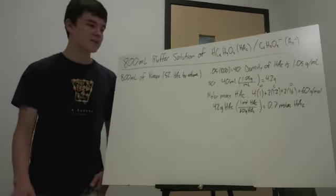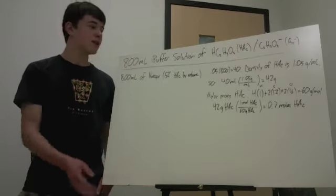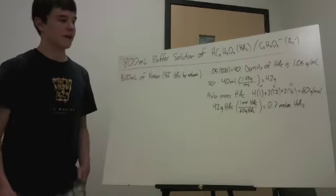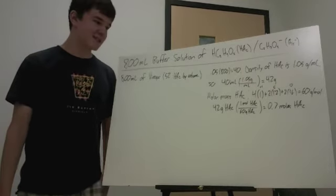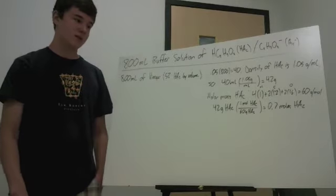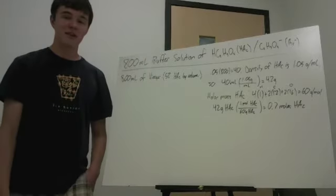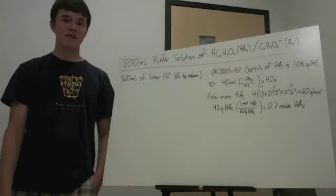Now, to find out how much sodium hydroxide we're going to need to make this solution, we have to figure out first how many moles of acetic acid we've got. So, the molar mass of acetic acid is going to be 60 grams per mole, and we're going to calculate that we have 0.7 moles of acetic acid.